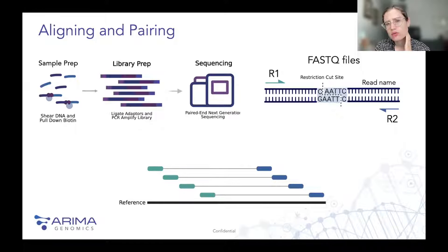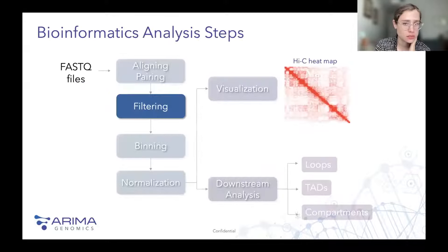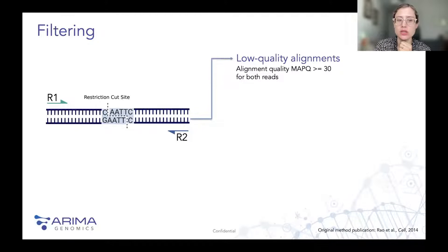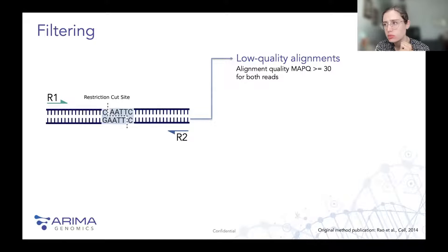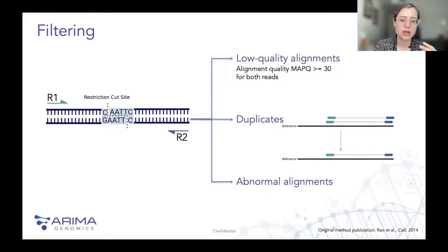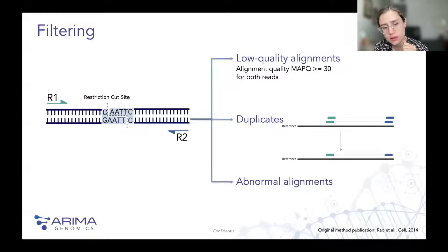After aligning your reads, not all of them will be useful — that's why you need a filtering step. You need to remove low-quality alignments: cases where mapping quality is less than 30 for both read ends. PCR and optical duplicates also need to be removed — we want one unique read; if many reads pile up in the exact same region and are identical, we keep only one. We also remove what are called abnormal alignments — definitions specific to Juicer, though other pipelines have similar subcategories.